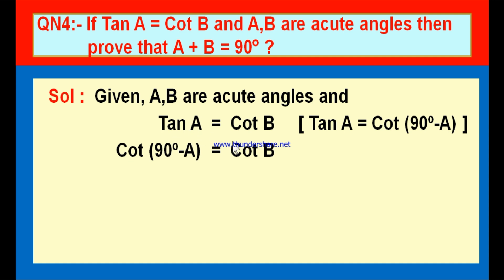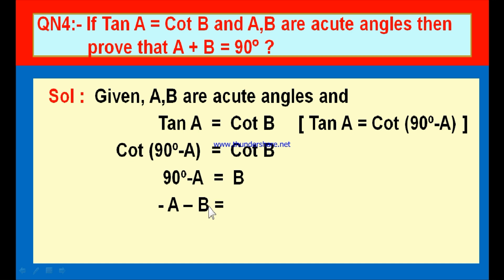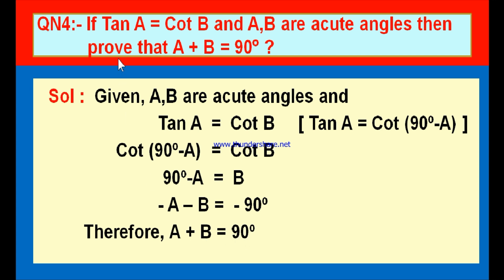Now both LHS and RHS contain the same trigonometrical ratio cot and cot. Since the ratios are the same and LHS equals RHS, we can equate the angles: 90° − A = B. Bringing both A and B to one side, A plus B is equal to 90 degrees. Therefore, we have proved that A plus B is equal to 90 degrees. This is how we proved question number 4.